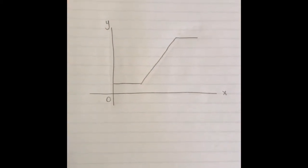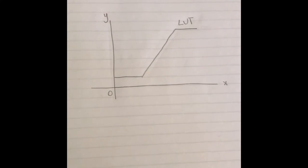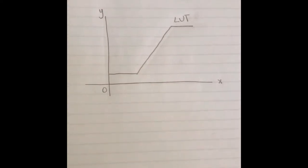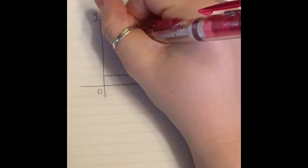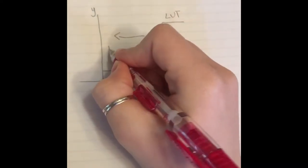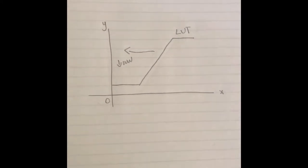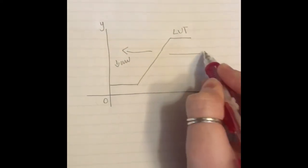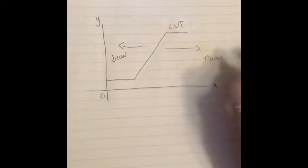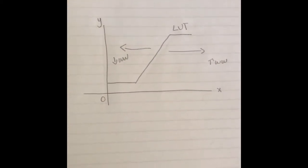Here is another graph in digital radiography known as the lookup table. The lookup table is a post-processing technique that works with window width to adjust the contrast of the image. If you have a more narrow latitude, it will decrease the window width, increasing the contrast and decreasing the grayscale. If you have a wider latitude, it will increase the window width, decreasing the contrast and increasing the grayscale.